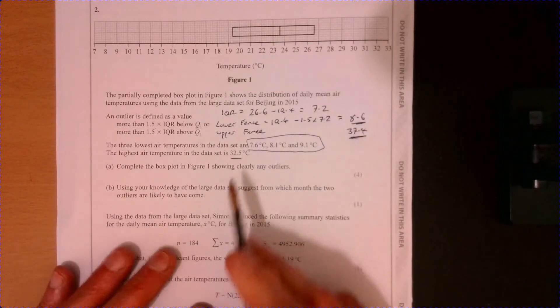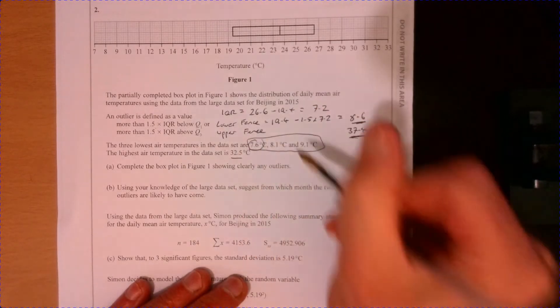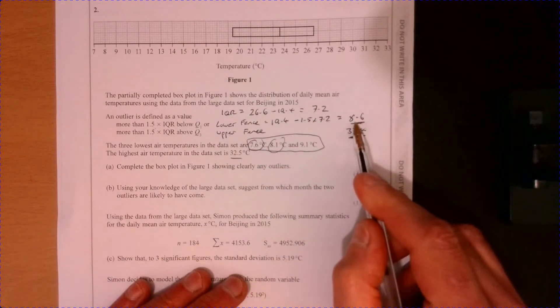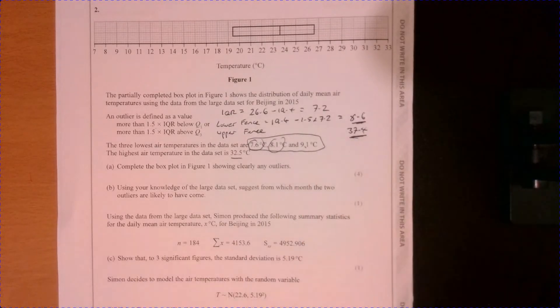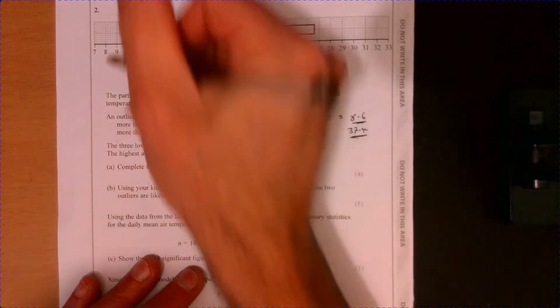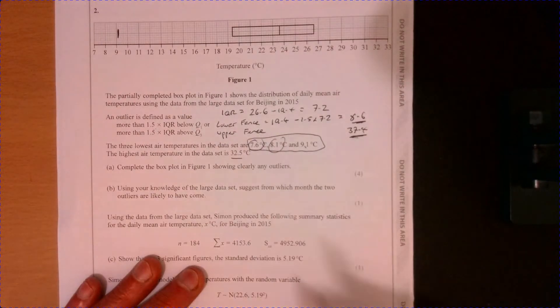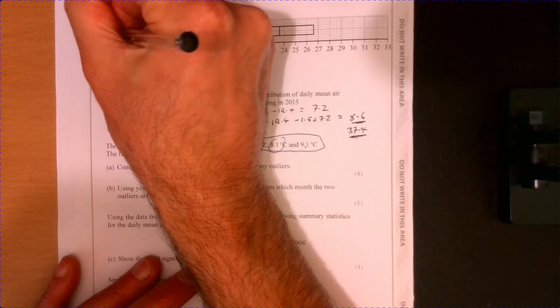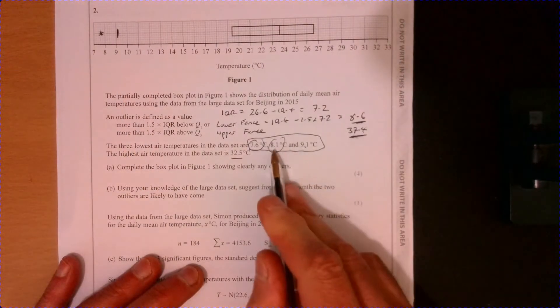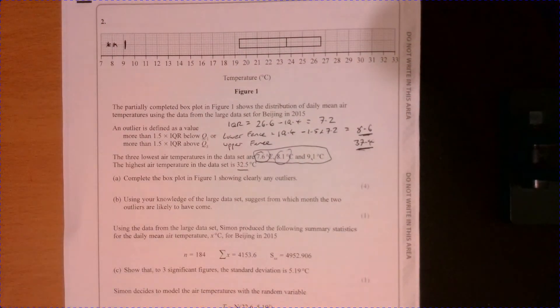Right, so that must be an outlier and that must be an outlier because they're below this 8.6. So 9.1 is actually gonna be the lower tail. So if we just draw a line in at 9.1, as close as we can just there. It's also important to identify these points. So we got 7.6, I'm just gonna put a little star there. 8.1, just put a little star just there.